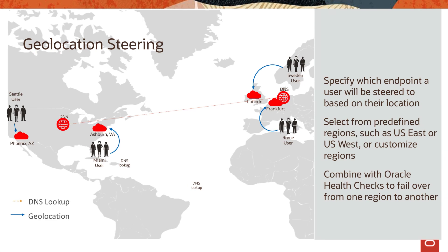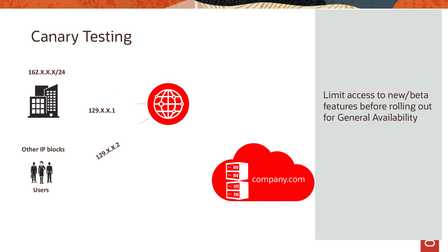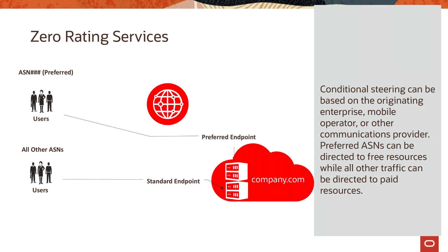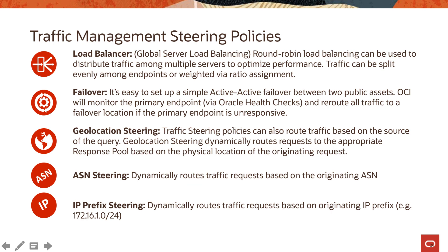A couple more examples: you can use IP prefix for canary testing, or use an ASN number for steering your traffic to a particular workload within the cloud. The different traffic management policies available within OCI include: load balancer, failover, geolocation steering, ASN steering, and IP prefix steering.